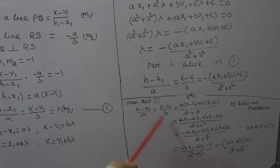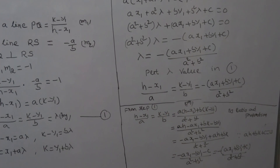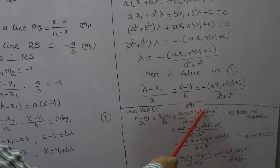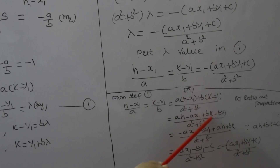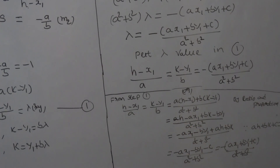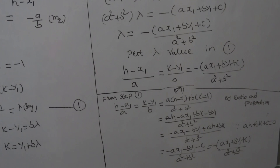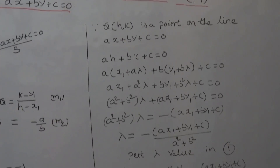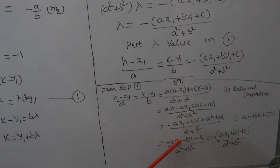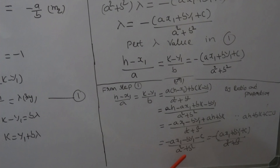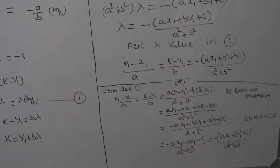Using the ratio and proportion method from (H - X1)/A = (K - Y1)/B, we get [A(H - X1) + B(K - Y1)] / (A² + B²) = (AH - AX1 + BK - BY1) / (A² + B²). Since Q(H, K) lies on the line, AH + BK + C = 0, so AH + BK = -C. This gives (-AX1 - BY1 - C) / (A² + B²) = -(AX1 + BY1 + C) / (A² + B²), confirming the formula.